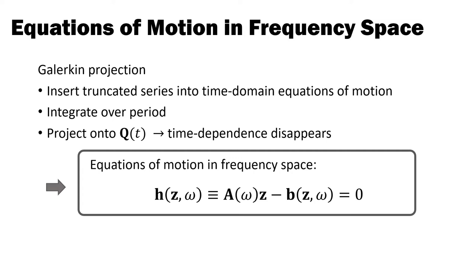Here, the linear term A includes contributions from inertia and damping, and B holds all nonlinear contributions from internal and external forces. These frequency space equations of motion, which we also denote by H of z omega equals zero, are a system of nonlinear equations that we can solve with Newton's method to obtain the steady state motion of the mechanical system. And that is pretty much the essence of the harmonic balance method.